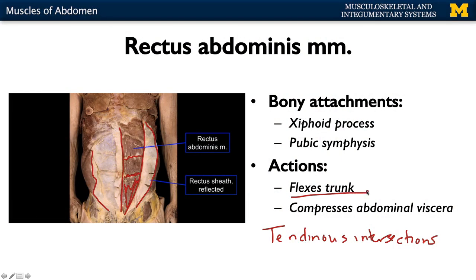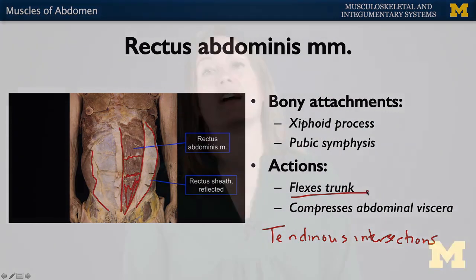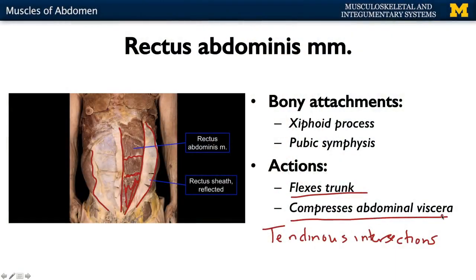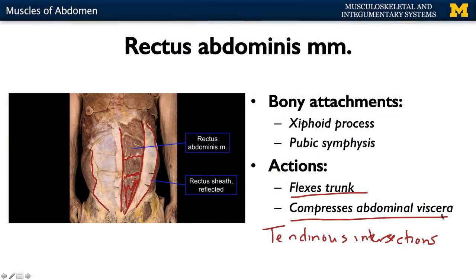The rectus abdominis is the main muscle for flexion of the trunk — think of a typical crunch or sit-up. Similar to the anterior lateral muscles, it also plays a role in compression of the abdominal viscera.